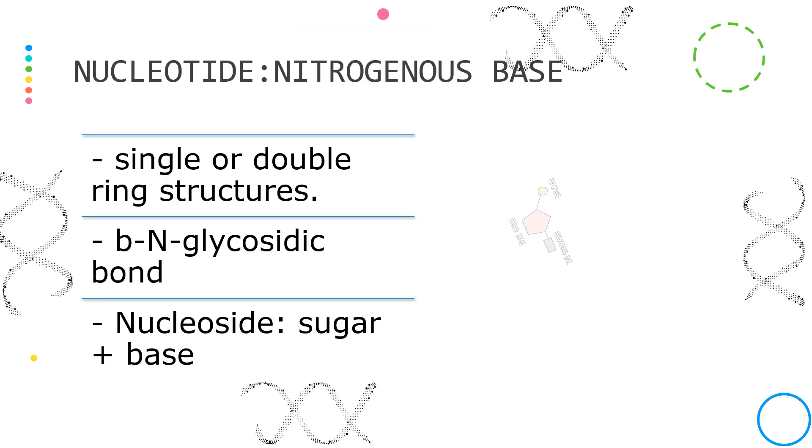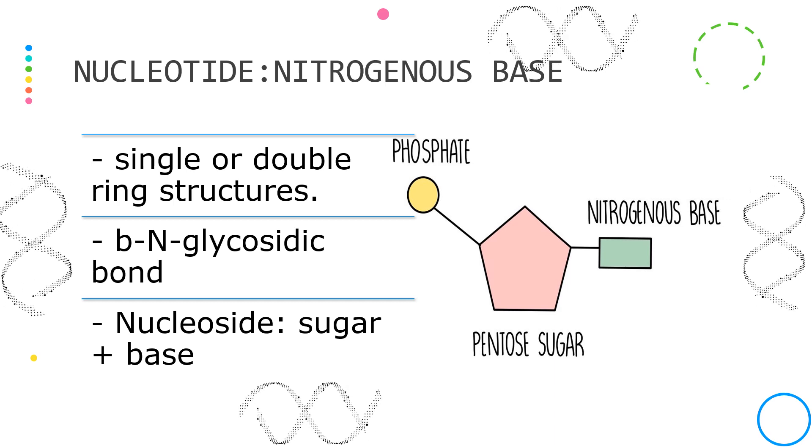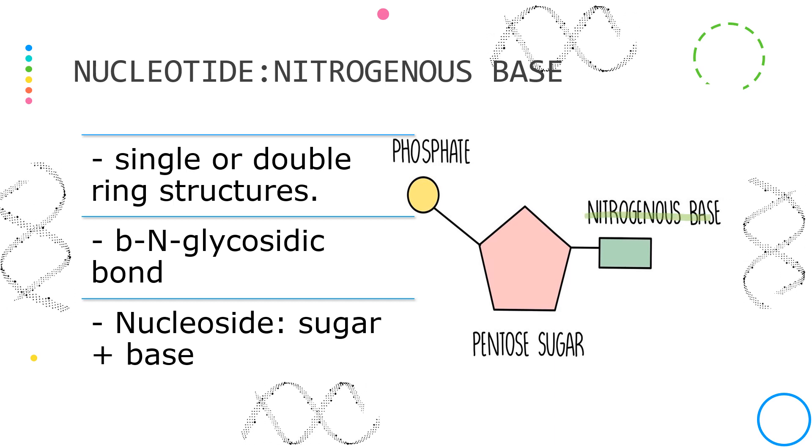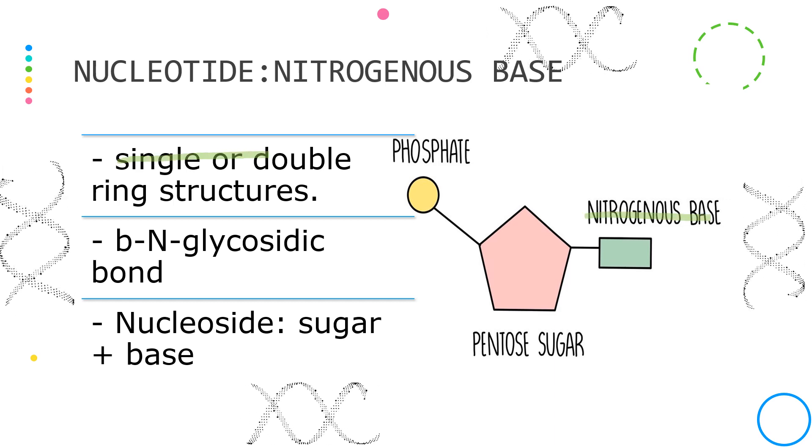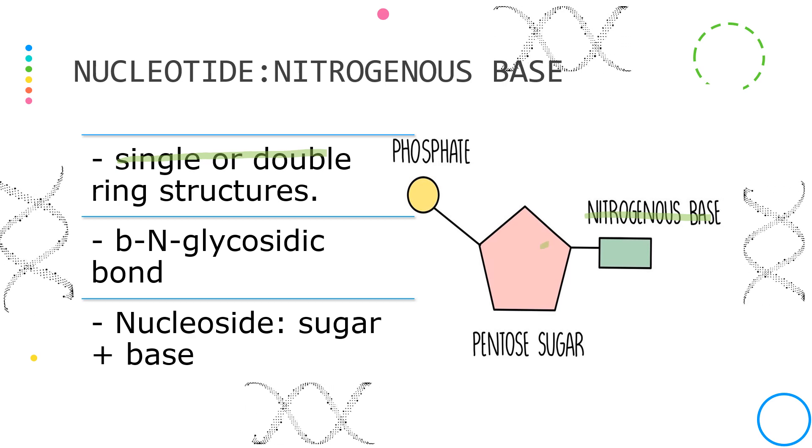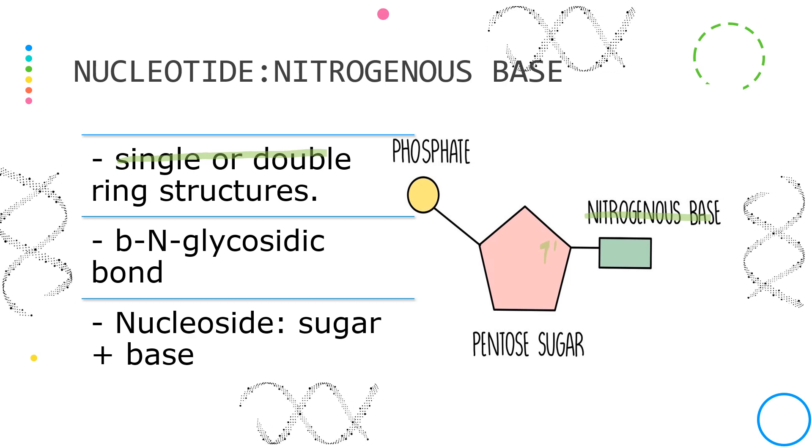The second component of a nucleotide is a nitrogenous base. This is a single or a double ring structure attached to the 1 prime carbon of the sugar.